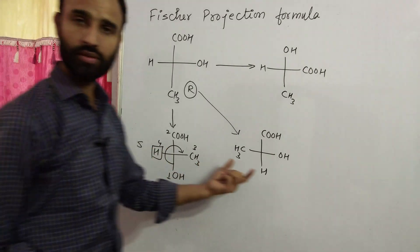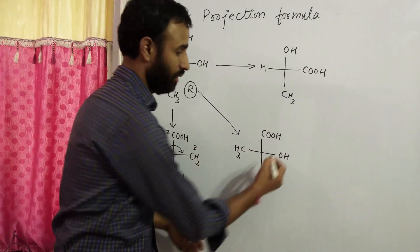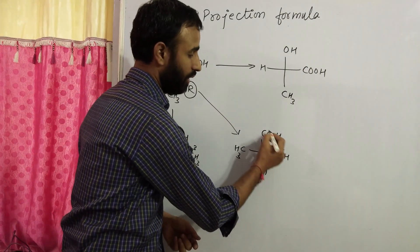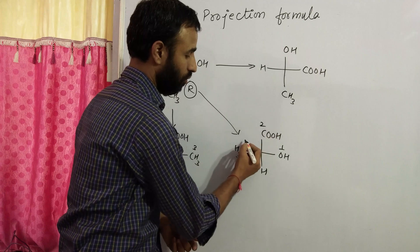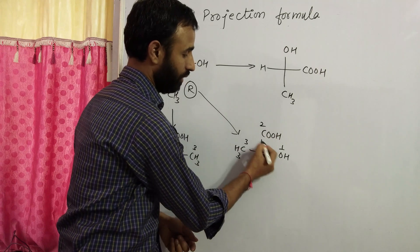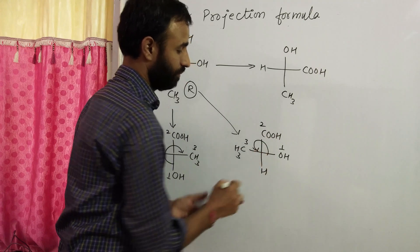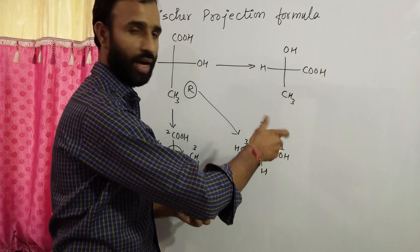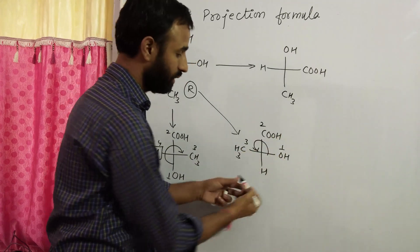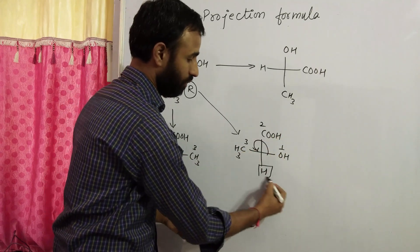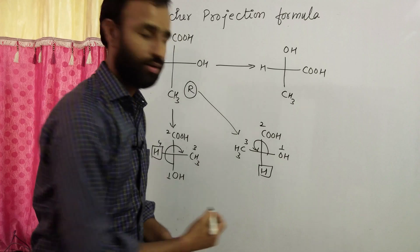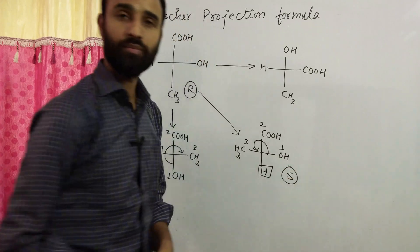Checking further: 1, 2, 3 — anti-clockwise, vertical — also S. Any odd number of exchanges inverts the configuration.